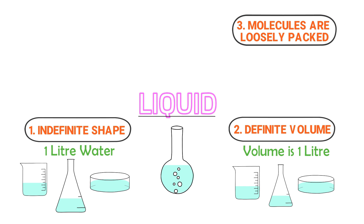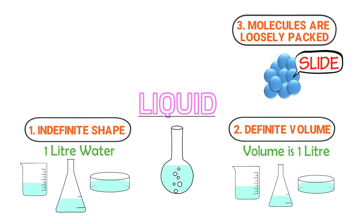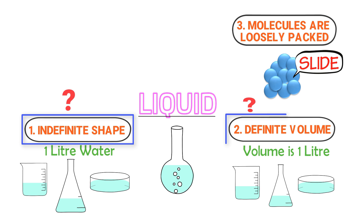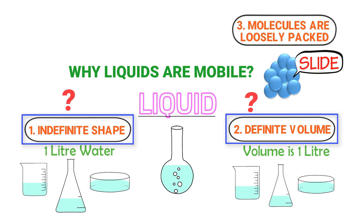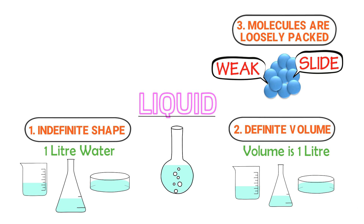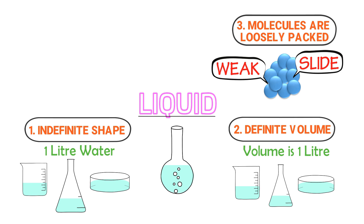Thirdly, the molecules of liquids are loosely packed together in a non-uniform pattern — molecules of liquids slide over each other. Here are two important questions: why do liquids have indefinite shape but definite volume, and why are liquids mobile or why do liquids flow? The answer to both questions is the same: the attraction force between the molecules of liquids is weak compared to solid. Due to this weak attraction force, molecules of liquids slide over each other, hence they flow or are mobile. As a result, due to this sliding motion of molecules, liquids have indefinite shape.